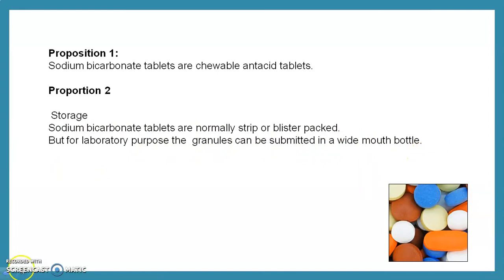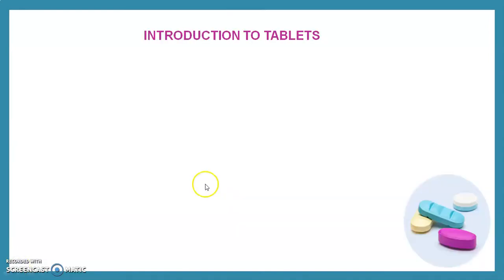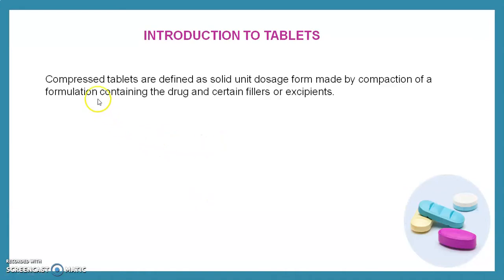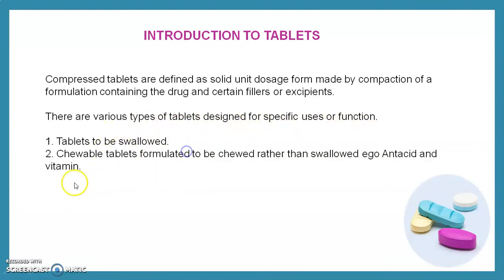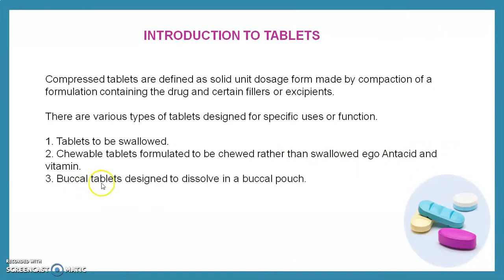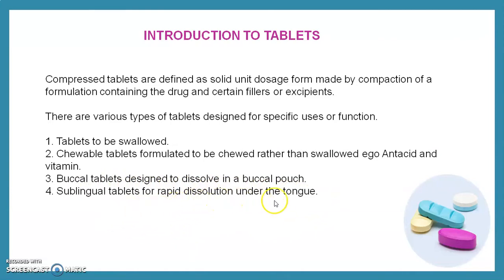Now we see the theory regarding tablets. Tablets — compressed tablets — are defined as solid unit dosage forms made by the compaction of a formulation containing the drug and certain fillers or excipients. There are various types of tablets designed for specific use. Chewable tablets are formulated to be chewed rather than swallowed — example: antacid and vitamin tablets. Buccal tablets are designed to dissolve in the buccal pouch. Sublingual tablets are for rapid dissolution under the tongue.